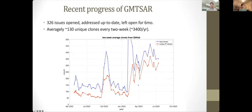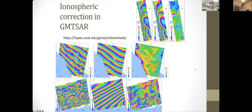GitHub traffic: over the past year about 300 issues were opened and addressed. They are left open for six months in case updates come in. There are about 130 unique clones every two weeks, summing to about 3,400 unique clones per year. There's been an increase after 2023, though the reason is unclear. Example datasets are available on the Topex datasets page for ALOS-1, ALOS-2, and Sentinel-1. Filtering can sometimes be a little slow but is being worked on.